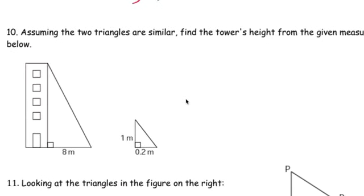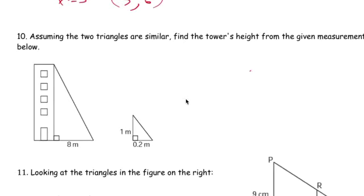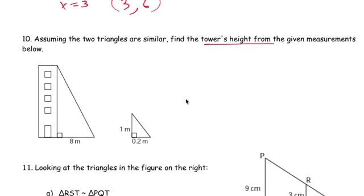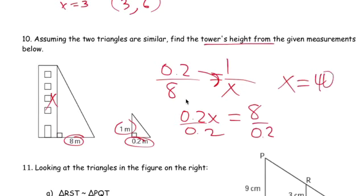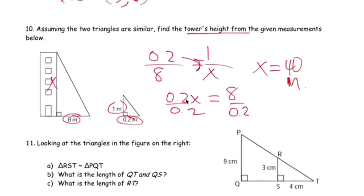These are Pythagorean Theorem. Similar triangles. Assuming similar. Find a tower's height from the given measurement. Two are similar. So I have a 0.2 over, these are corresponding sides, over 8, equals to 1 over the unknown here. The x for the building. So 0.2x multiply diagonal equals to 8. Divide 0.2. I think that's 40. So the building, the tower is 40 meters high.